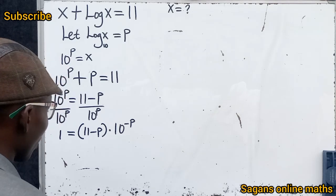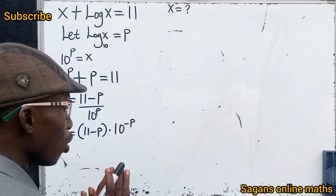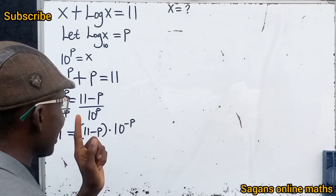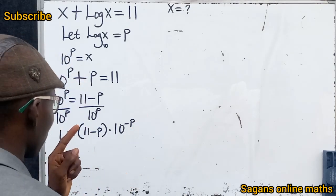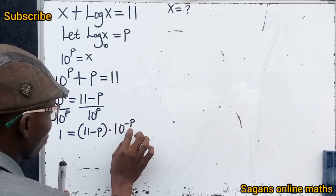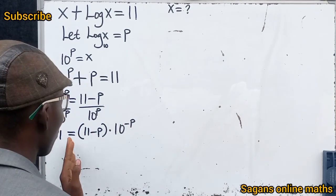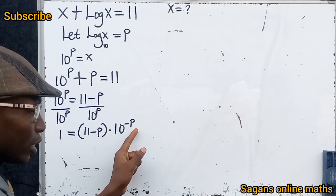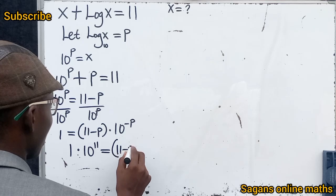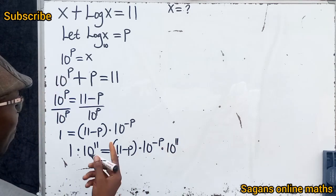Now observe carefully. The coefficient of 10^(-p) is (11 - p). Our interest is to make this coefficient match the exponent. To get 11 in the exponent alongside the -p, we multiply both sides by 10^11. So we have 10^11 = (11 - p) · 10^(-p) · 10^11.